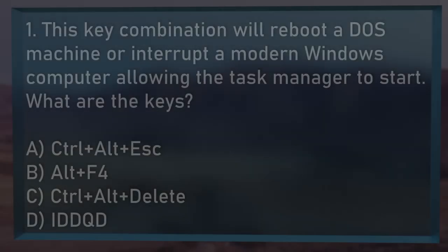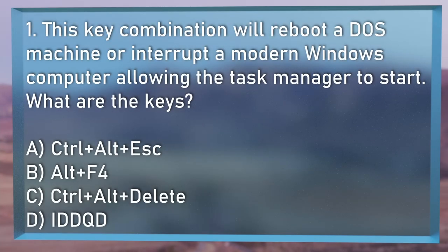We've reached the halfway point. Round 3, question 1: Originally intended as a development feature, this key combination will reboot a DOS machine or interrupt a modern Windows computer, allowing the task manager to start. What keys are they? Is it A, Ctrl+Alt+Escape; B, Alt+F4; C, Ctrl+Alt+Delete; or D, ID DQD?